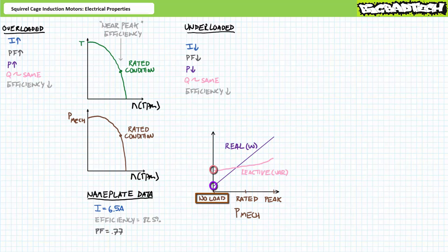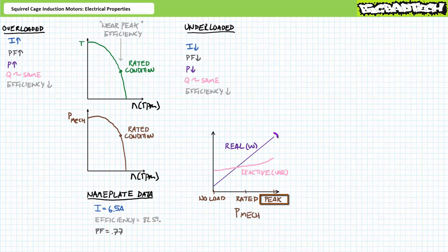As we transition to the rated conditions, the motor produces the rated mechanical power output — in our previous example, 2 horsepower or 1,492 watts. To yield this usable power output, the motor consumes an increased amount of roughly 1.8 kilowatts of real power, where a majority is directed towards useful output and about 300 watts is directed towards losses like heat, friction, or noise. The motor additionally consumes roughly 1.5 kilowatts of reactive power to establish the rotating magnetic field. As the motor transitions to peak power conditions, it produces peak mechanical power output, consuming an increased amount of real power and only slightly more reactive power. In summary: as mechanical power output goes up, real power consumed must also go up, while reactive power remains relatively constant.